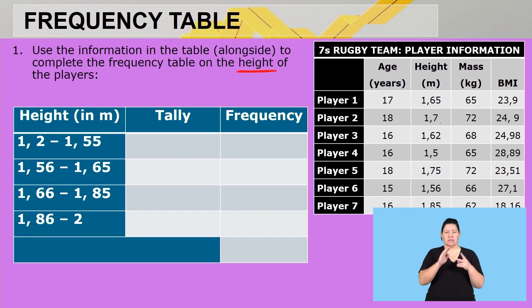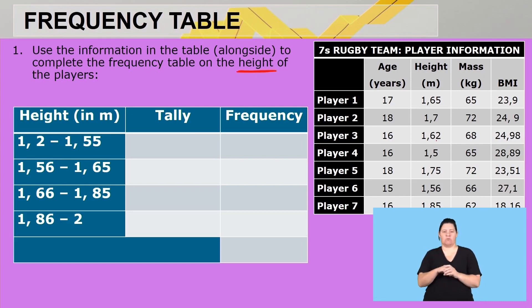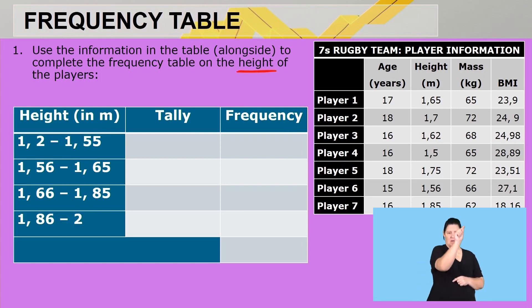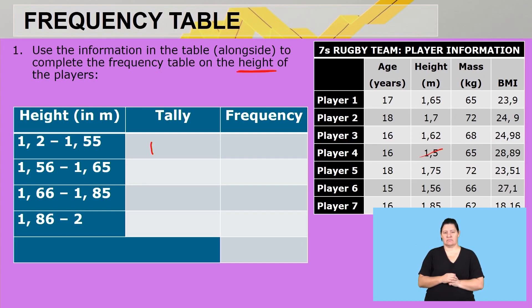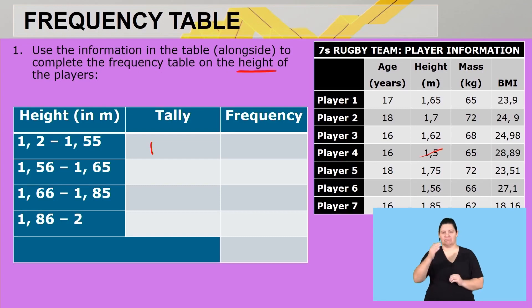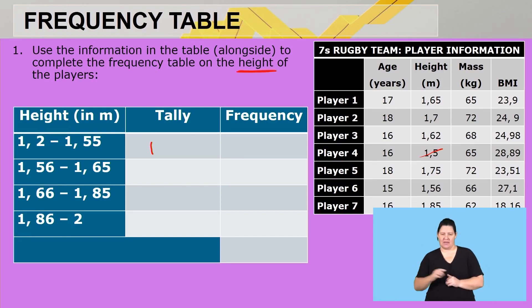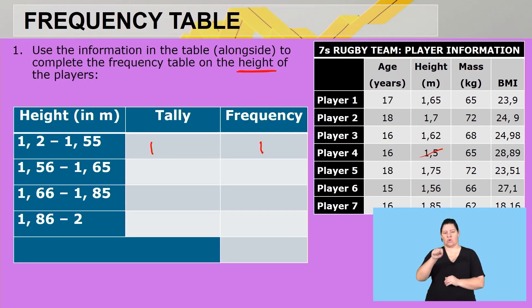Player one is definitely not in the 1.2–1.55m range. Player two at 1.7m is not. Player three at 1.62m is not. Player four at 1.5m is — I'll tally that one. Player five at 1.75m is not. Player six at 1.56m is also not in that range. Player seven at 1.85m is not. So the frequency for this interval is one.